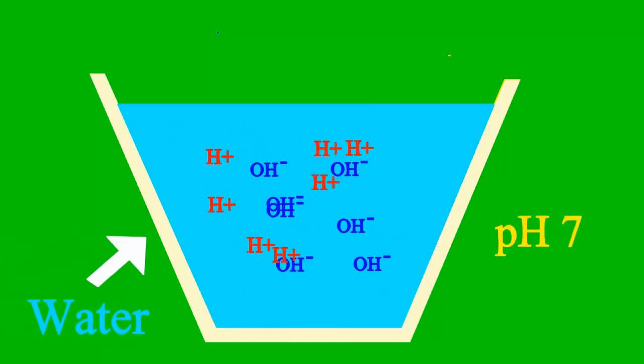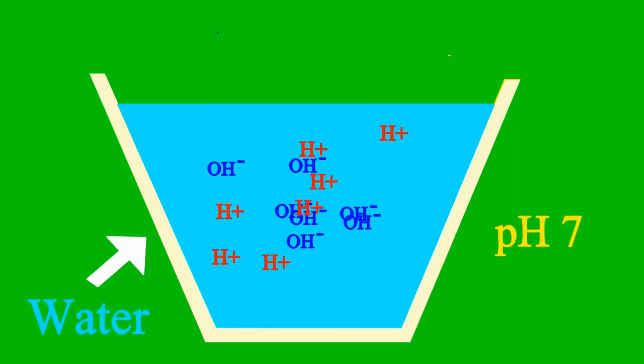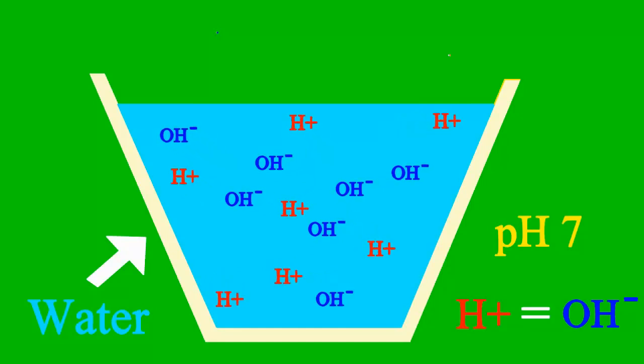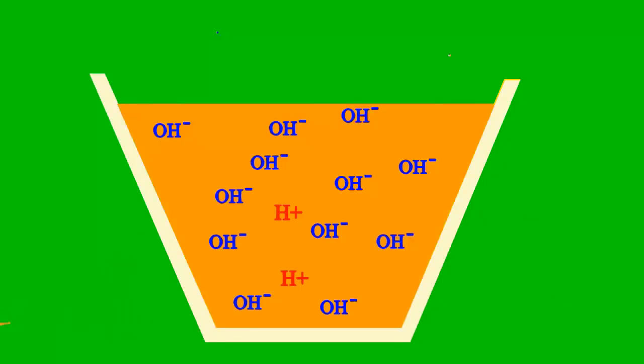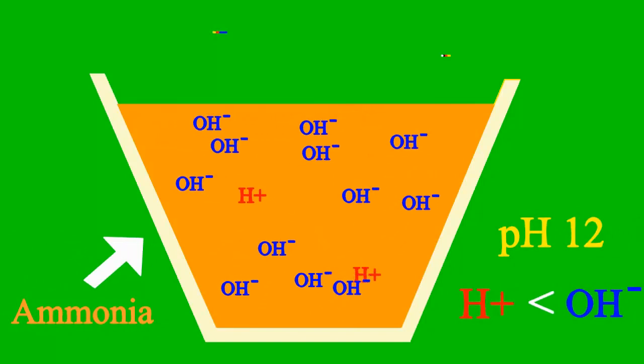When the pH is 7, the sample is neither acid nor base. Less than 7, it's an acid. More than 7, it's a base all the way.